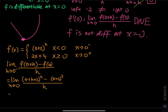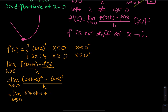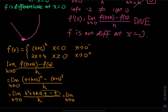Opening the square: (h plus 2) squared equals h squared plus 4h plus 4. Subtracting 4, we get h squared plus 4h divided by h. Factoring out h gives h plus 4, and canceling h yields the limit of h plus 4 as h goes to 0, which equals 4. So the left-side slope is 4.